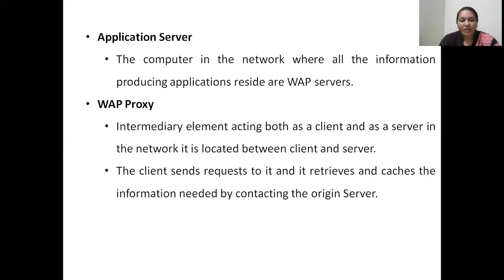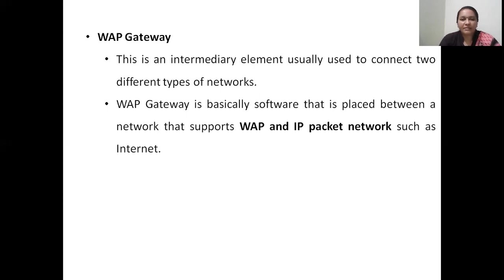The third component is the WAP proxy, an intermediate node which sits between the client and server. Whenever a client needs some data, it sends a request to the WAP proxy rather than directly to the origin server. The WAP proxy forwards this request to the origin server, retrieves the data, and caches the information in its buffer before the client takes it. The next main component is the WAP gateway, an intermediary software element used to connect different types of networks — whether wired or wireless. The WAP gateway is software used for interconnection between WAP and IP packet networks operating on the internet.